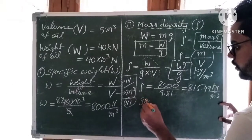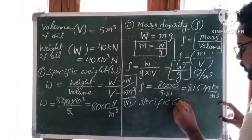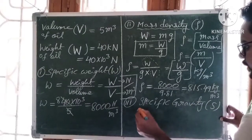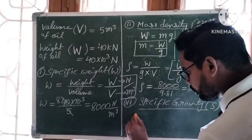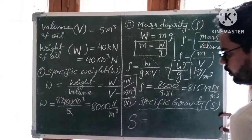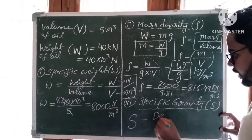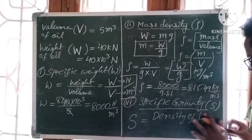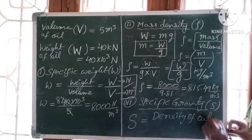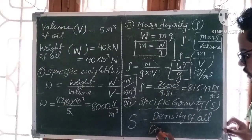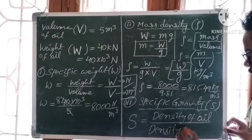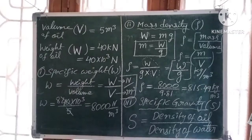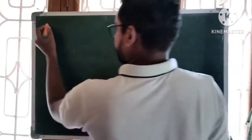We need one more parameter: specific gravity, denoted by capital S. Specific gravity is equal to mass density of the liquid (here, oil) divided by mass density of water. Let us find this.